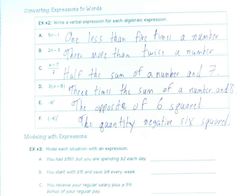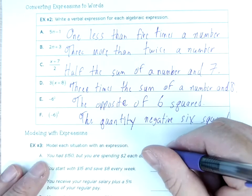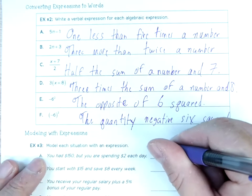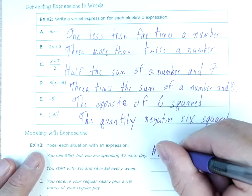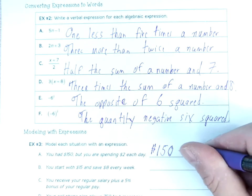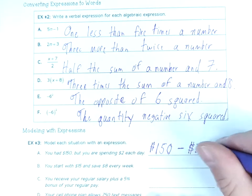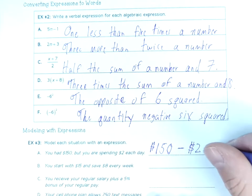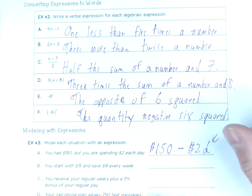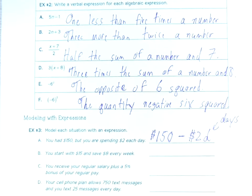Next: model your situation with an expression — real-life models. We had $150 and we're spending $2 each day. So we have 150 — you don't have to use the dollar symbol. We're taking away $2 per day. The variable for day can be d, or the word 'day.' I'll use d and write on the side that this means day: 150 − 2d.